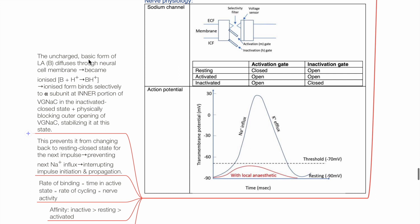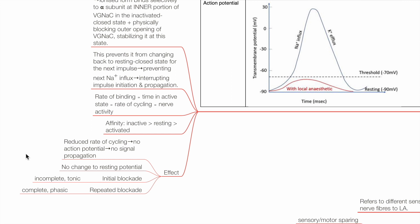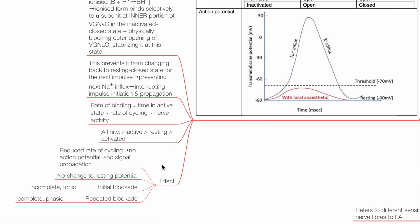The uncharged basic form of LA diffuses through the neural cell membrane and becomes ionized in the intracellular fluid. The ionized form binds selectively to the alpha subunit at the inner portion of the VGNAC at the inactivated closed state, while physically blocking the outer opening of the VGNAC, stabilizing it at this state. This prevents it from changing back to the resting closed state, interrupting action potential formation. Rate of binding of LA to the VGNAC is proportional to time in the active state, rate of cycling, and nerve activity. Degree of affinity of LA to VGNAC in descending order: inactivated state, resting state, and activated state. Effects of LA binding: reduced rate of cycling leading to no action potential and no signal propagation; no change in resting potential; initial blockade is incomplete and tonic; repeated blockade leads to complete and phasic block.